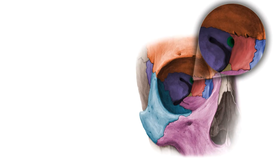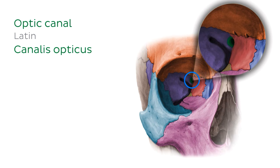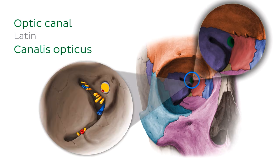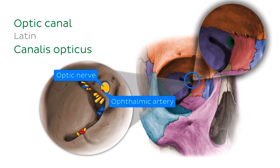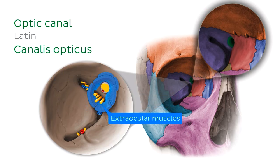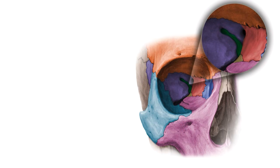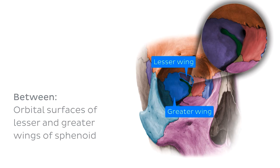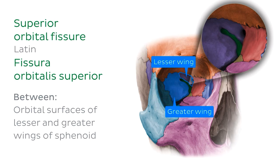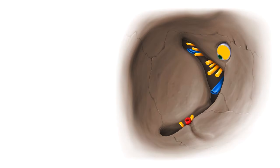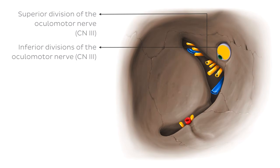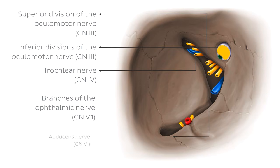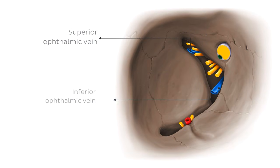One landmark of importance close to the lesser wing is the optic canal, located antero-inferior to the lesser wing. The optic canal gives passage to the optic nerve, in addition to the ophthalmic artery, as they make their way to the ocular bulb or eyeball. Some of the extraocular muscles also have their origins close to this landmark. A little lateral to the optic canal, there is a rather large opening or cleft between the orbital surface of the lesser and greater wings of the sphenoid bone, known as the superior orbital fissure. It gives passage to the superior and inferior divisions of the oculomotor nerve, the trochlear nerve, some branches of the ophthalmic nerve, the abducens nerve, as well as the superior and inferior ophthalmic veins.